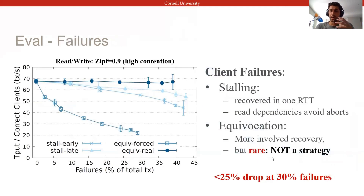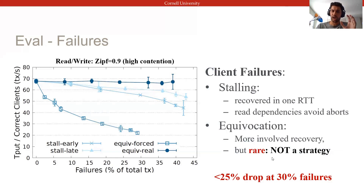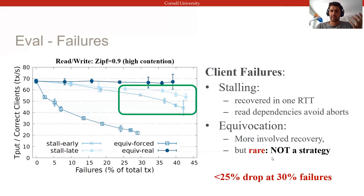Basel's strong performance was achieved partially on the back of empowering clients, so to quantify how robust Basel remains when clients misbehave, we evaluated the impact that misbehaving clients can have on the throughput of individual correct clients. Clients might harm the system by either stalling or equivocating during the commit phase. The impact of stalls is fairly low, since correct clients can usually finish them in a single round-trip and in most cases don't even need to abort their own transactions.